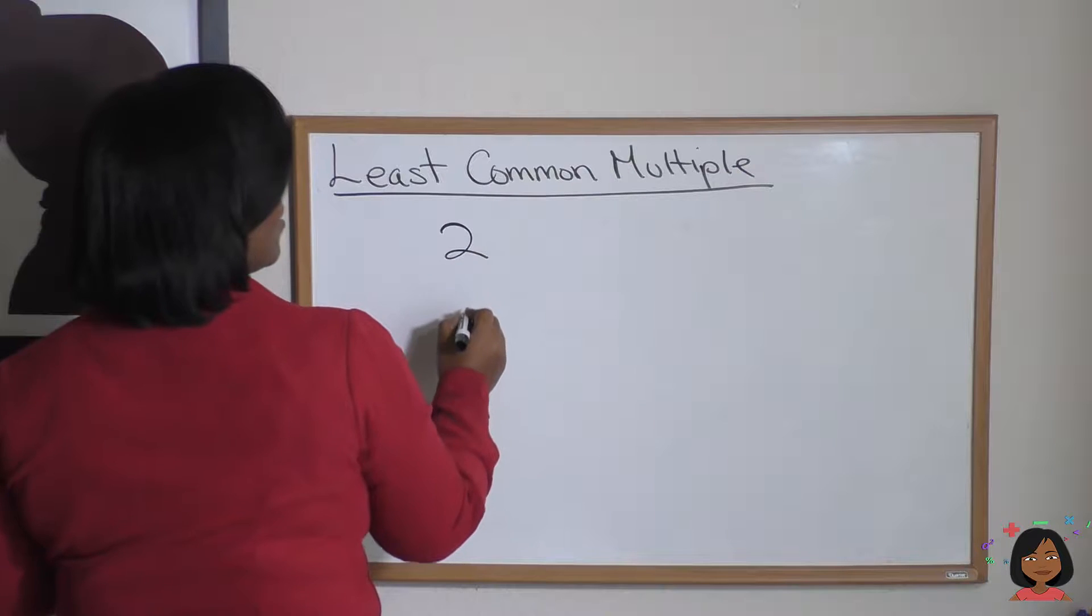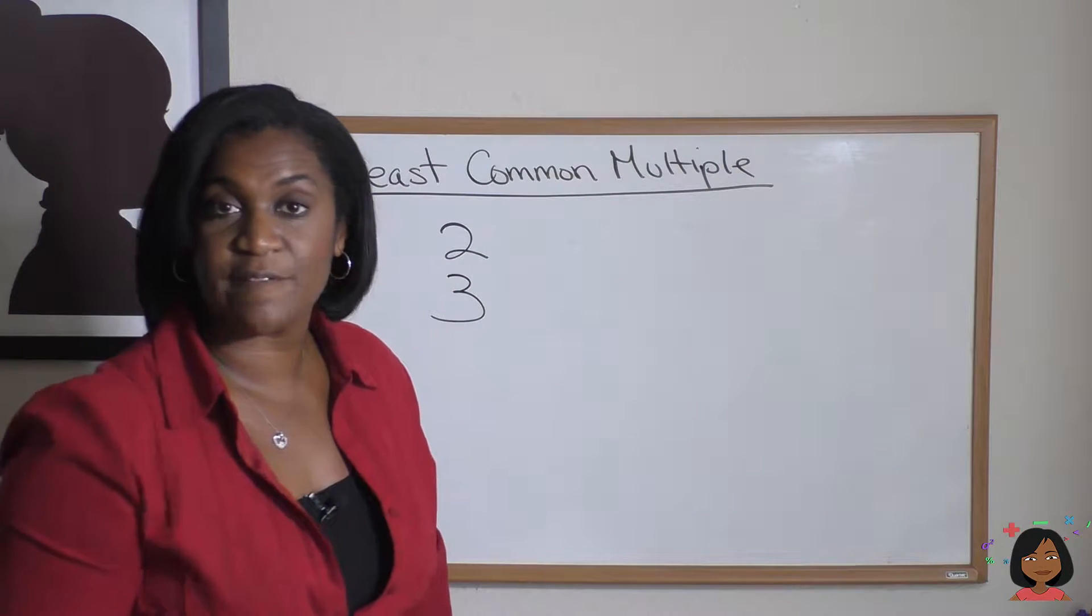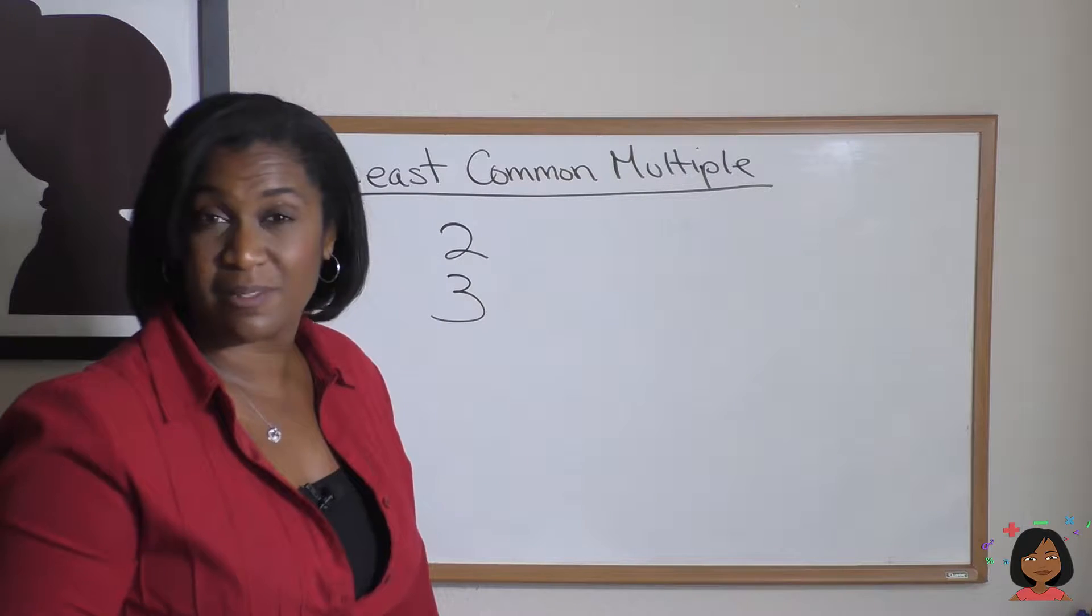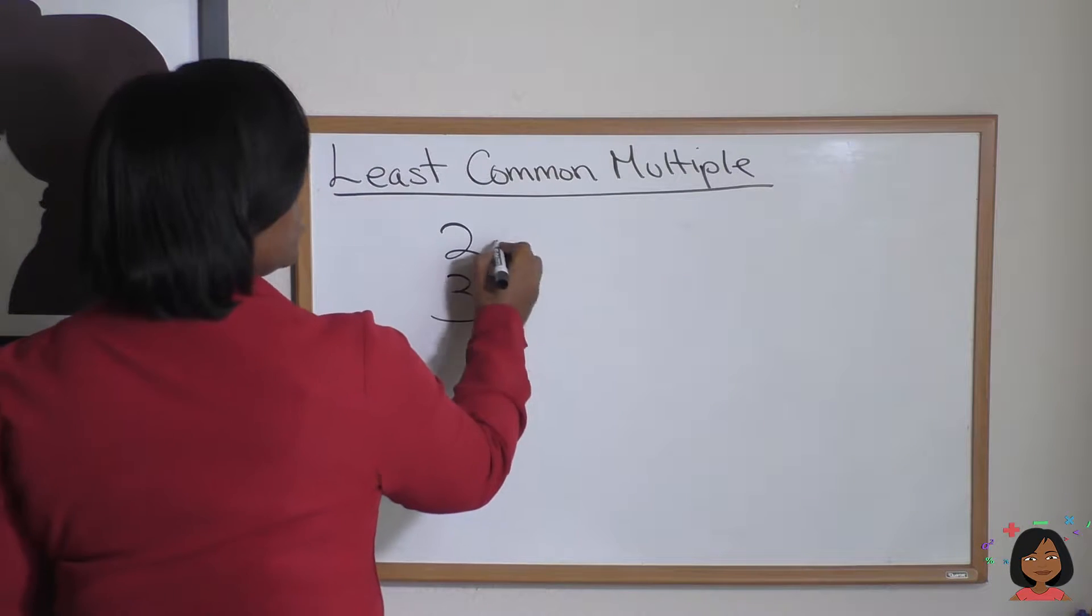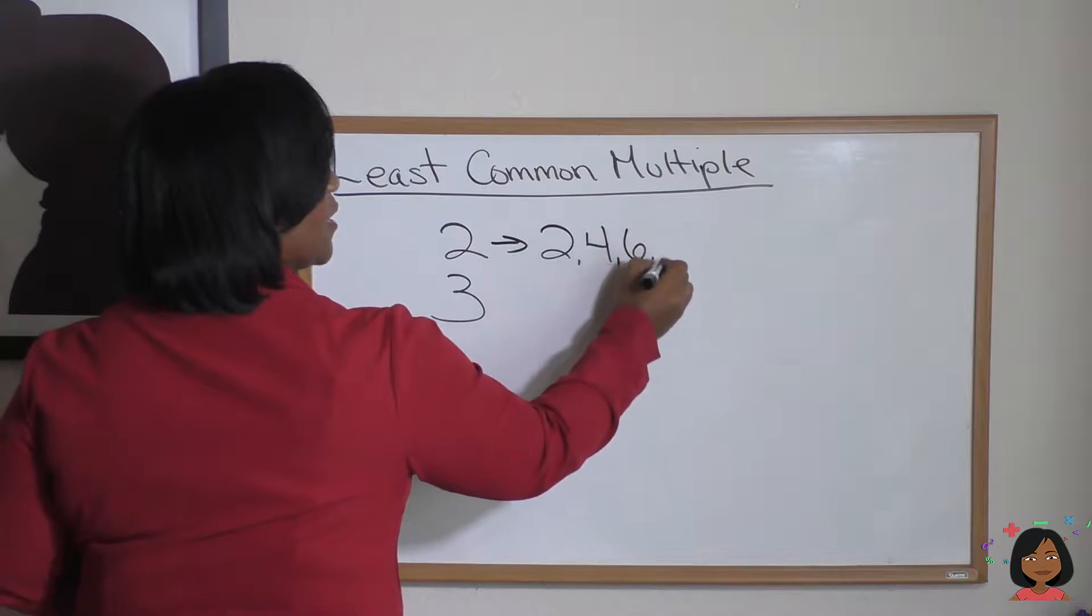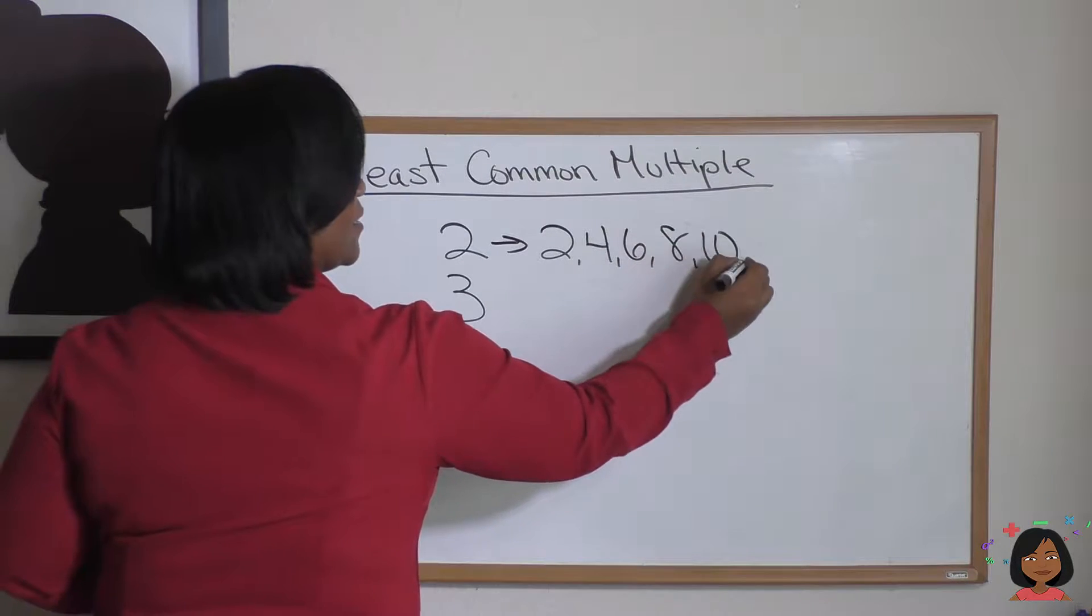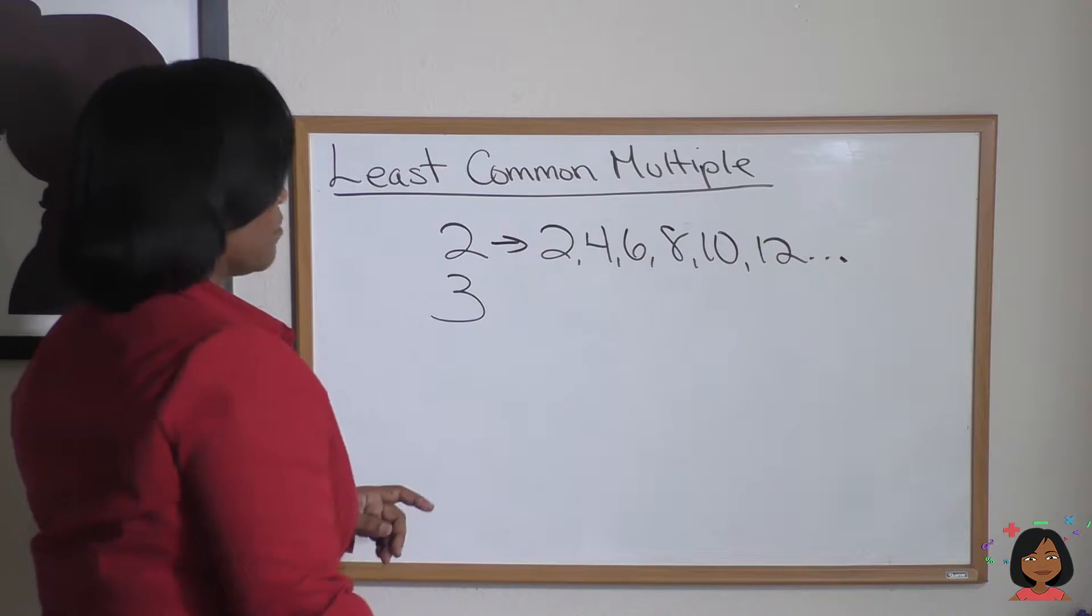If I wanted to do multiples of these numbers, well we know that multiples are really just like knowing our times tables. The multiples of two are two, four, six, eight, ten, twelve, on up. How about the multiples of three?